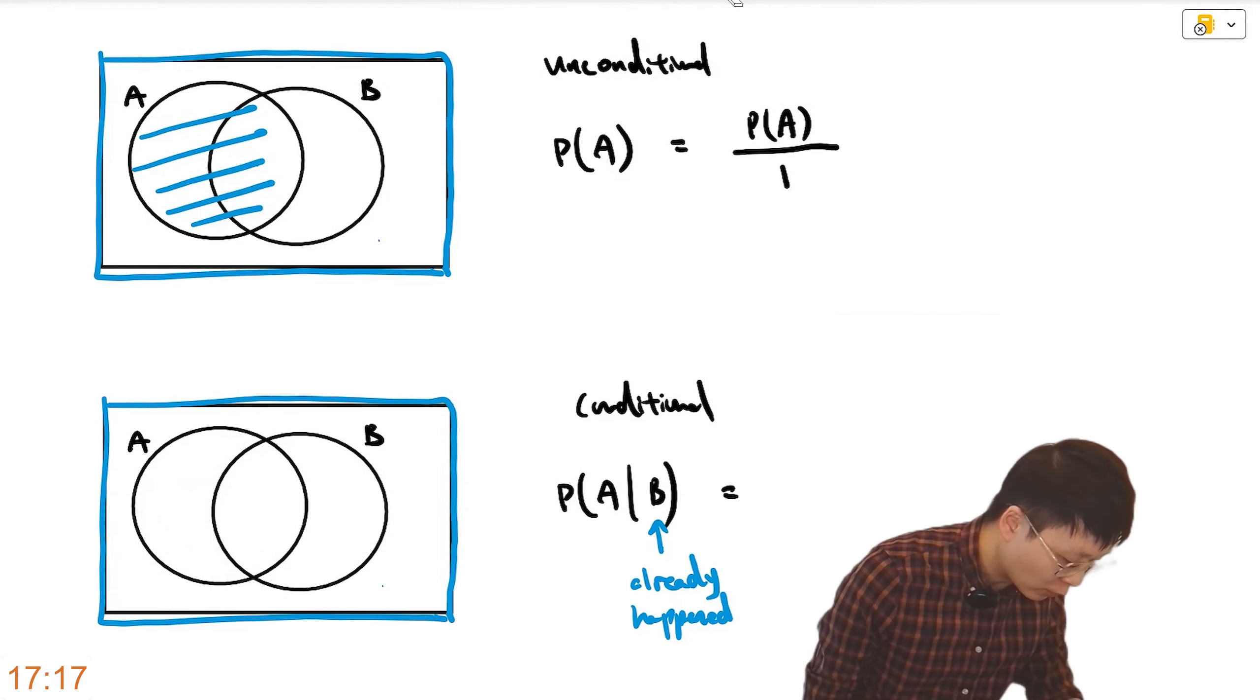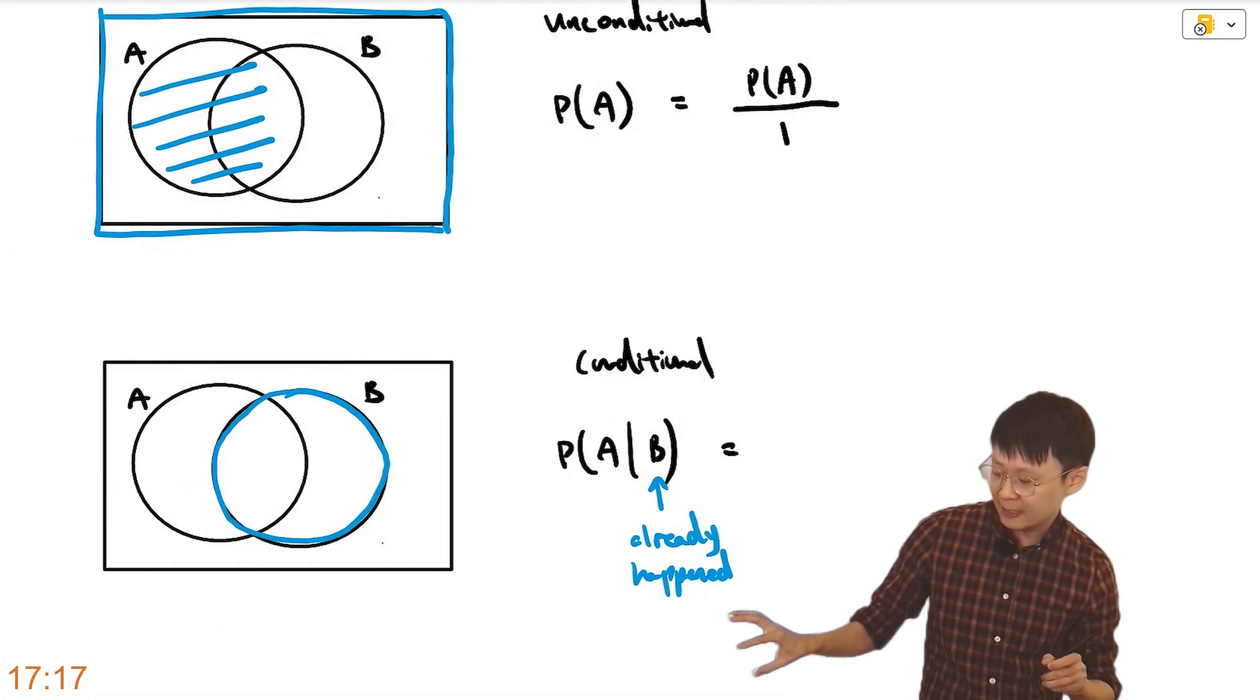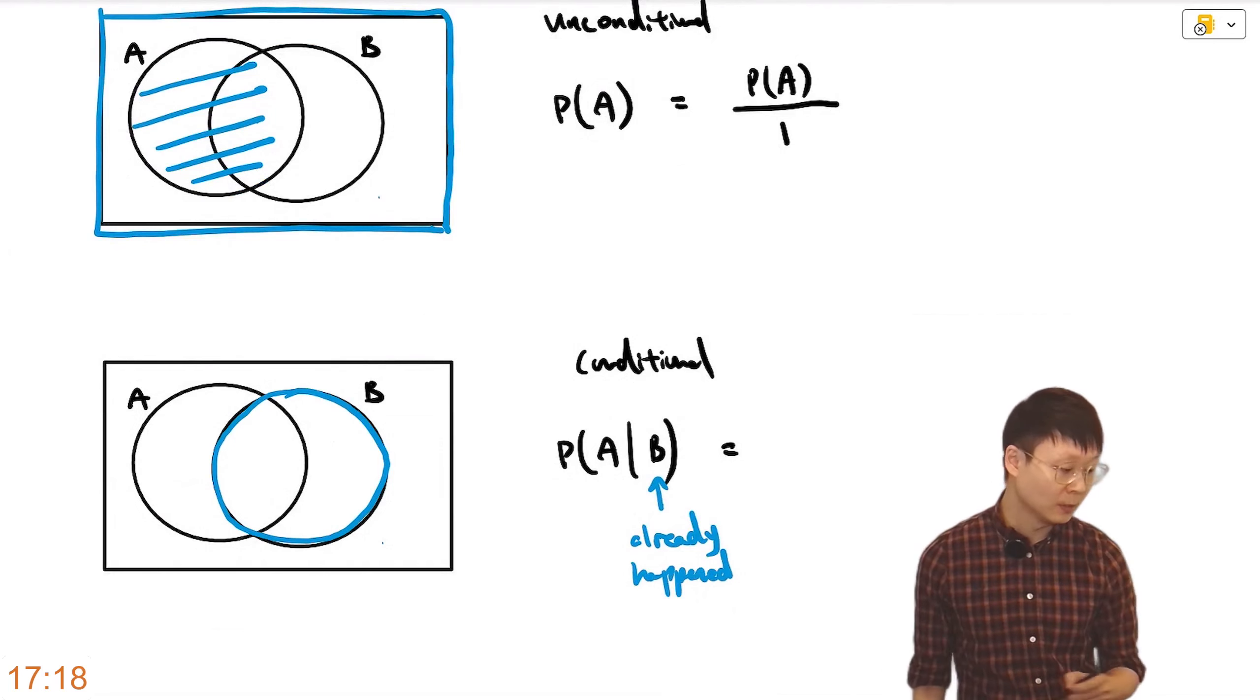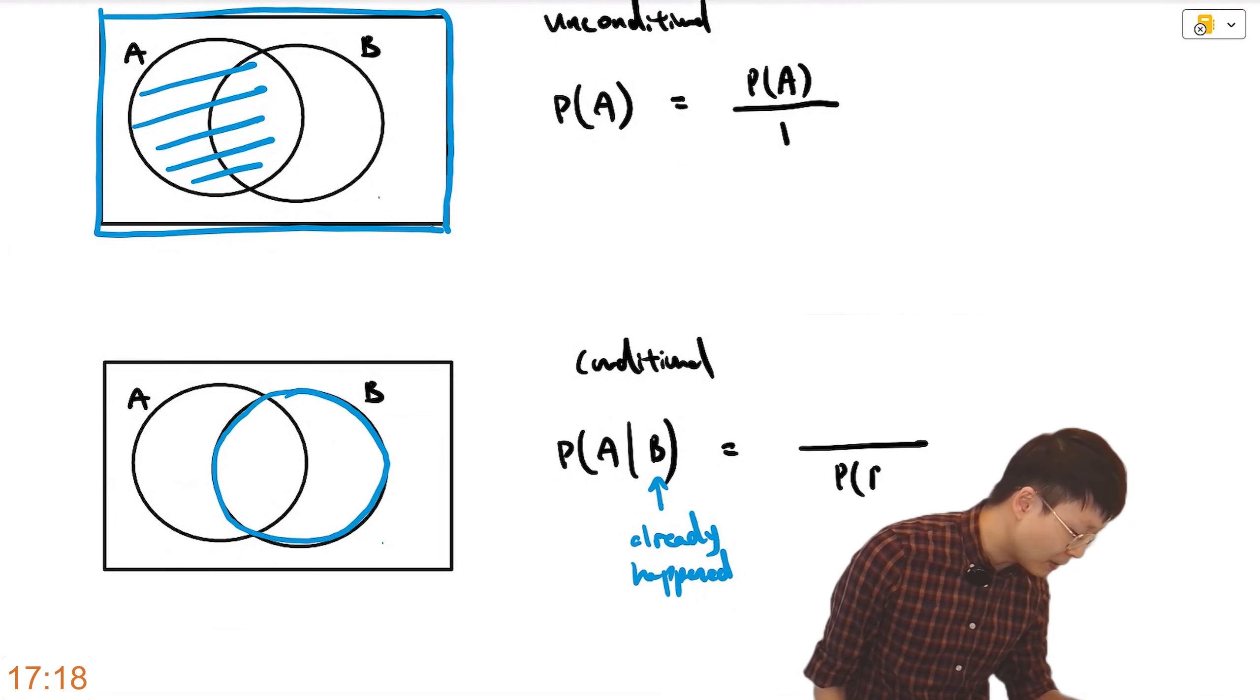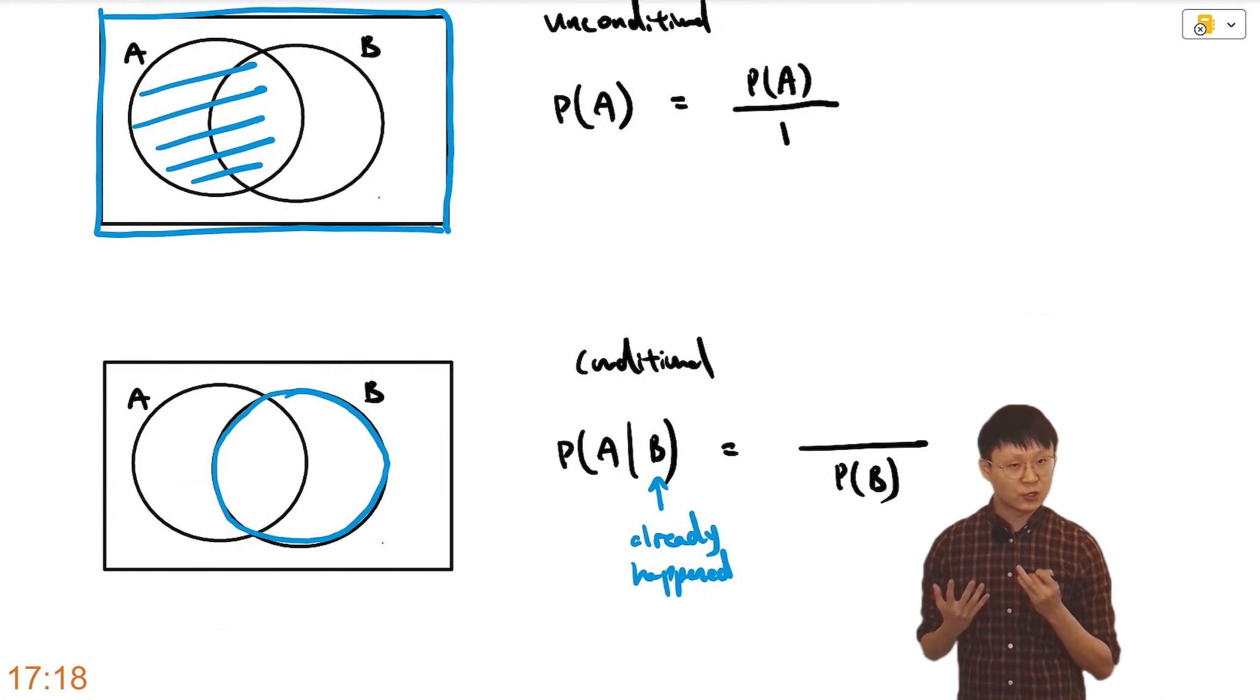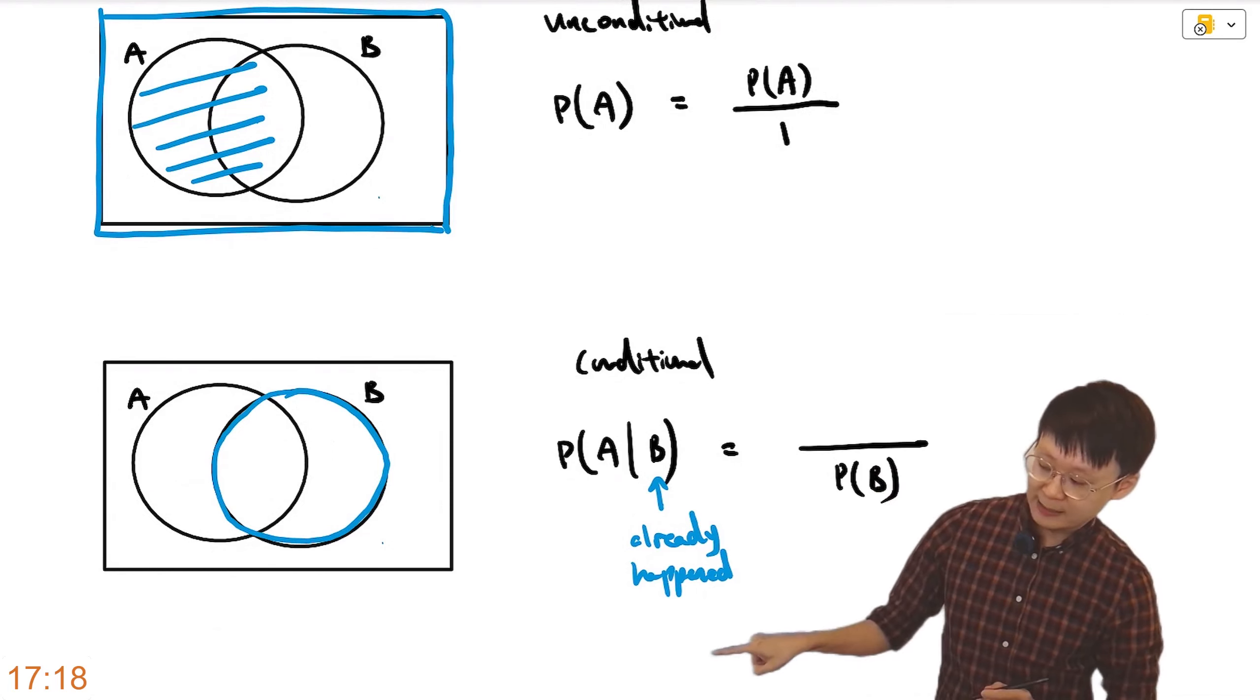Therefore, you don't have to consider 100% universe. You can restrict your universe to B. Think about what could happen inside the B circle. Which means to say the denominator would just be P(B), because your universe changed already. Previously, unconditioned is 100% probability, but now you can just zoom in to the things happening inside B.